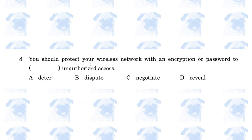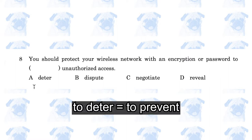You should protect your wireless network with an encryption or password to blank unauthorized access. The answer is A, to deter. To deter means to prevent, so you want to prevent unauthorized access.